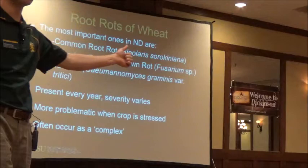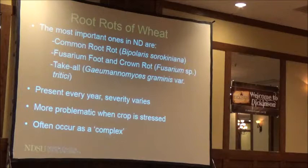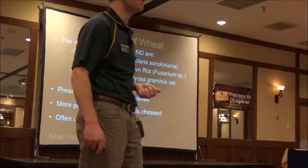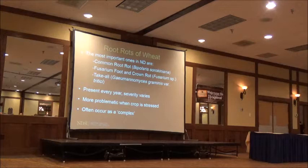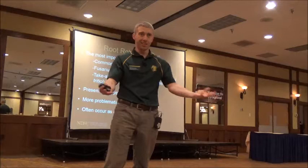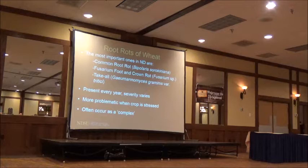Root rots are more problematic when the crop is stressed—drought environments, too much water, or planting into really cool soils where it takes a while for the crop to emerge. They often occur as a complex, meaning you may not have just Fusarium crown rot; you may have common root rot or a combination. When it comes to anything living in the soil, it's really difficult to see what's underneath. We don't have those types of assays to help.